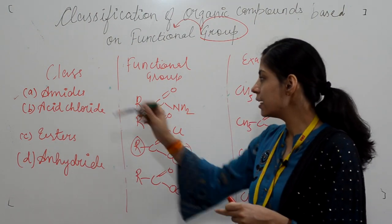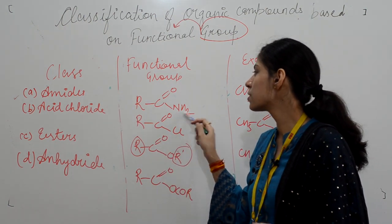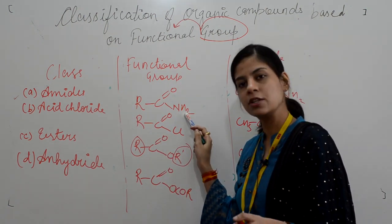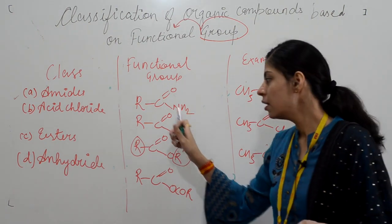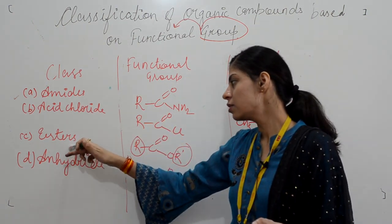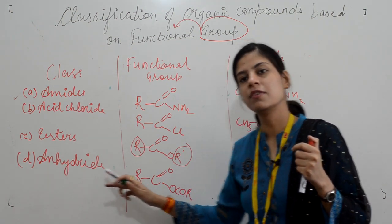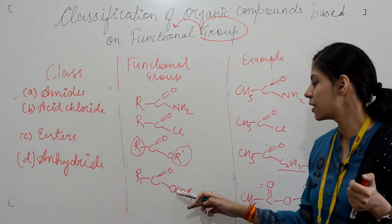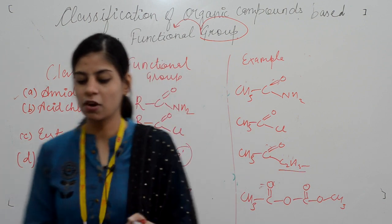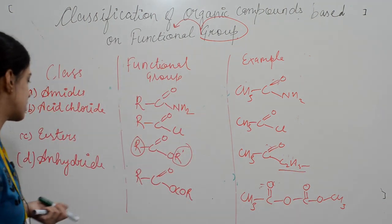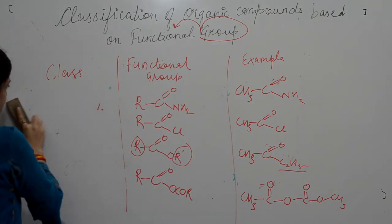To summarize, the four derivatives of carboxylic acid are: amides, where OH is replaced by NH2; acid chloride, where OH is replaced by Cl; esters, where OH is replaced by OR'; and anhydrides, where OH is replaced by O-C(=O)-R group.